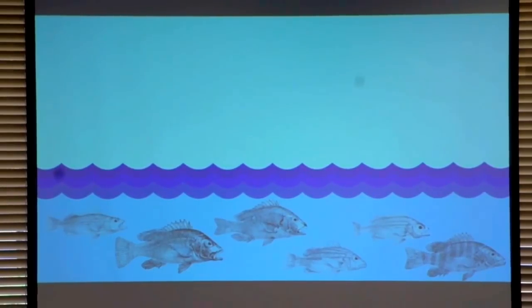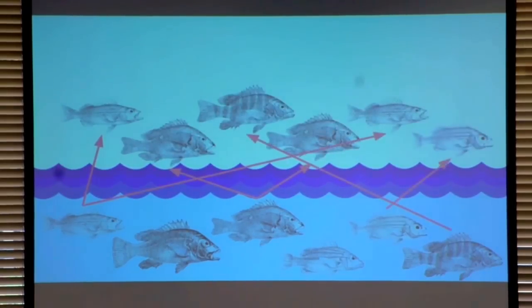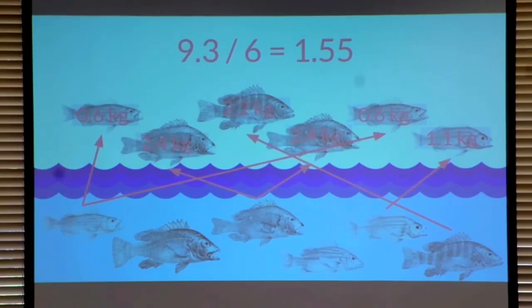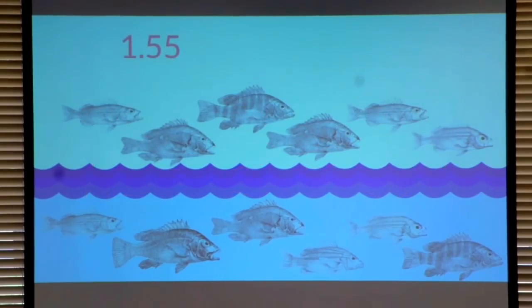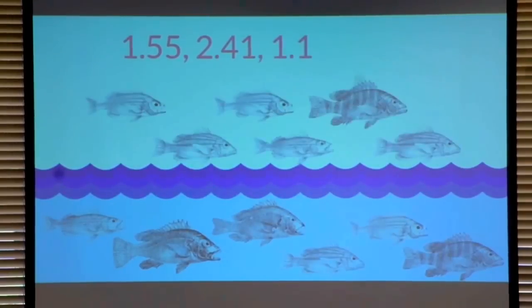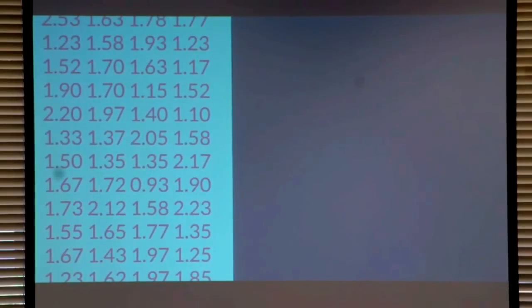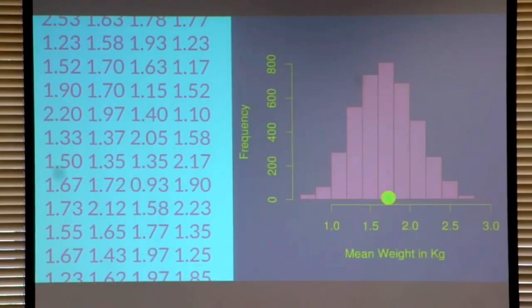Then you simulate redoing the data collection that you just did — catching six fish from this hypothetical population. Sometimes you get two of the same type of fish and sometimes you miss out on one type altogether. You weigh them and calculate their sample mean weight. You do this many, many times — say 10,000 times — and what you're left with is a long list of numbers representing the sampling distribution of the population mean. You can plot this distribution and by chopping off the tails calculate a 95% confidence interval.